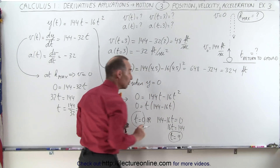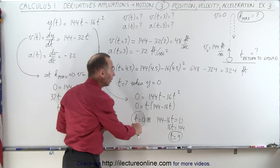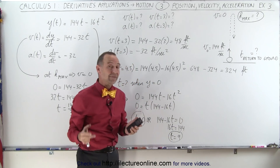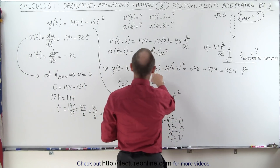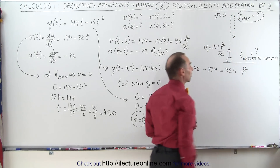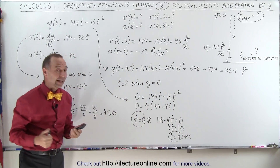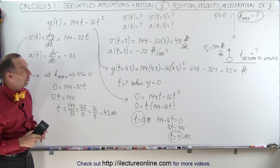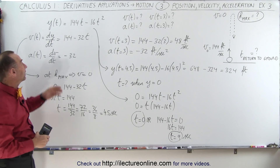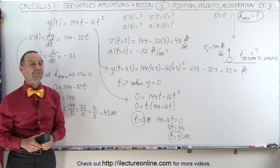So t equals 0 or t equals 9 when the object is on the ground. This makes sense: at t equals 0 the object hasn't left yet, and at t equals 9 seconds it returns to the ground. We found it took 4.5 seconds to reach maximum height and another 4.5 seconds to come back down, for a total round trip of 9 seconds. That's how we use calculus — taking the first derivative of position for velocity, and the second derivative for acceleration — to figure out everything about the object's motion. Thank you.